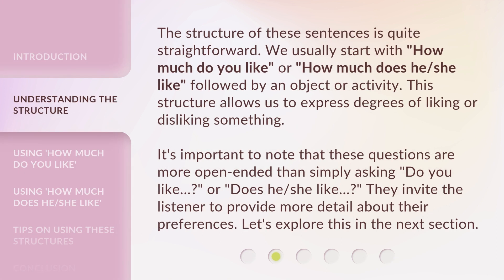The structure of these sentences is quite straightforward. We usually start with 'How much do you like?' or 'How much does he/she like?' followed by an object or activity. This structure allows us to express degrees of liking or disliking something. It's important to note that these questions are more open-ended than simply asking 'Do you like?' or 'Does he/she like?' They invite the listener to provide more detail about their preferences. Let's explore this in the next section.